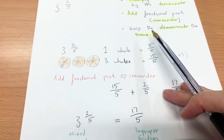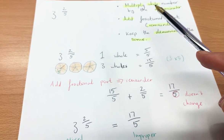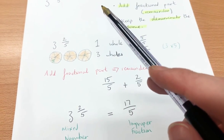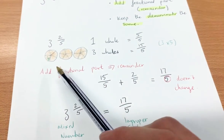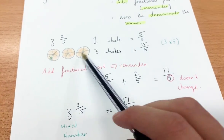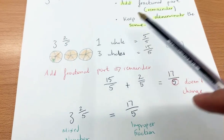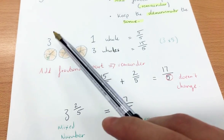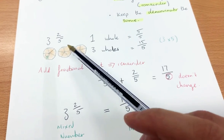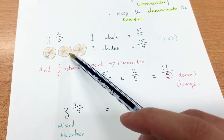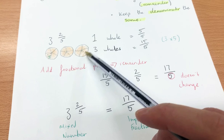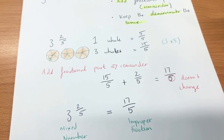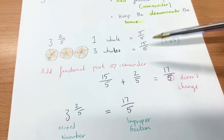So, 3 and 2 fifths. The first thing I need to do is multiply the whole number by the denominator. So 3 is my whole number and my denominator is 5. So 3 means 3 wholes — if you look here, I've got my 3 wholes and I've got 5 equal parts in each one. So 1 whole is equal to 5 fifths. But 3 wholes — how many fifths are there? Counting up: 1, 2, 3, 4, 5, 6, 7, 8, 9, 10, 11, 12, 13, 14, 15. So 3 wholes is equal to 15 fifths. All we did was multiply 3 by 5, which gives me 15 fifths.